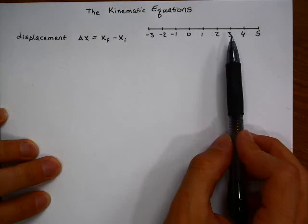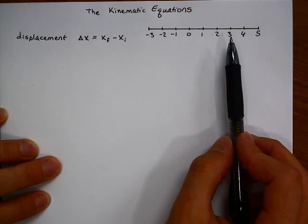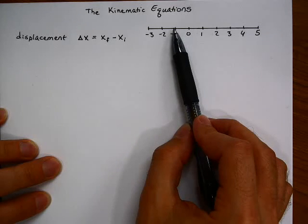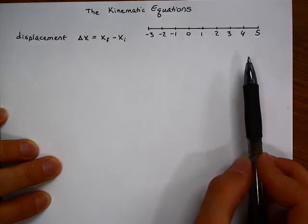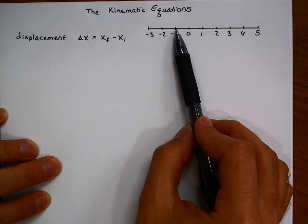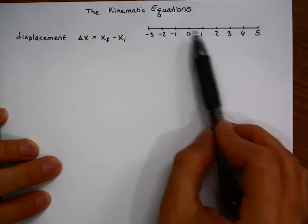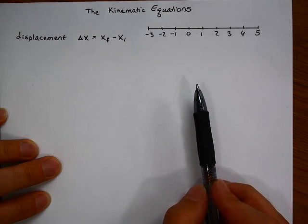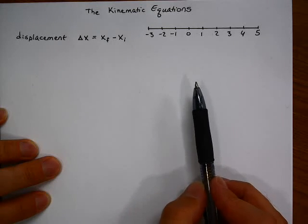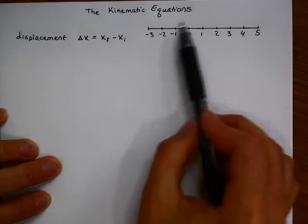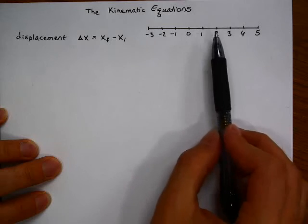If you move in the opposite direction, you end up with a negative displacement. From three to negative one would be a displacement of negative four. The final position would be negative one minus the initial position of three. Negative one minus three is negative four. The sign of the answer indicates the direction in which you are moving. Positive to the right, negative to the left.